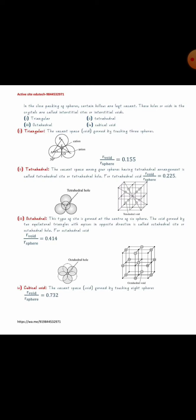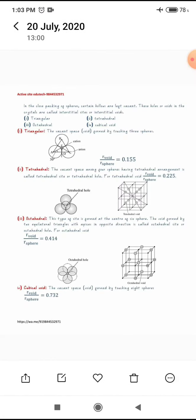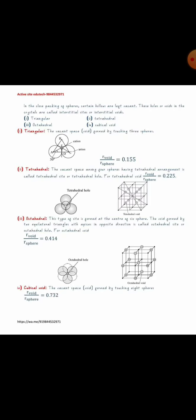An octahedral void is formed by the overlapping of two triangular voids. When you place triads of spheres above each other — two triangular voids with their apexes pointing in opposite directions up and down — these overlap and the empty space left inside is surrounded by an octahedron, which is why this void is called an octahedral void, as shown in the figure. The radius ratio of void to sphere is 0.414.